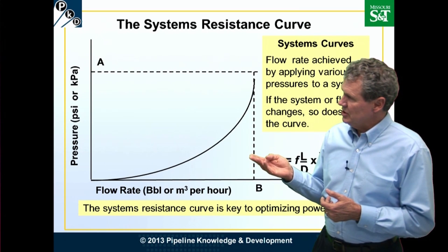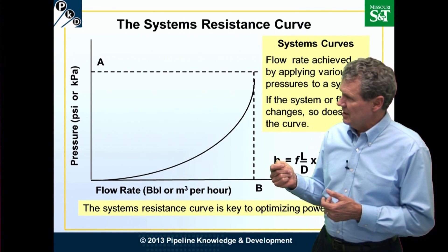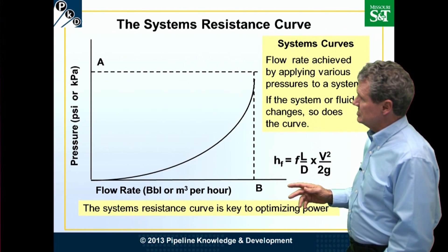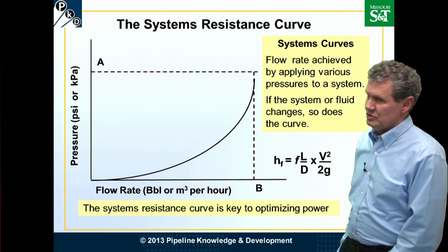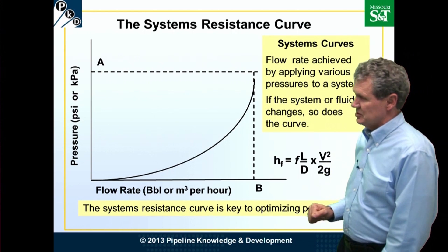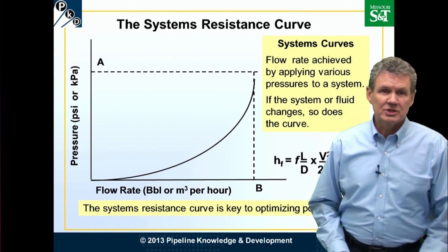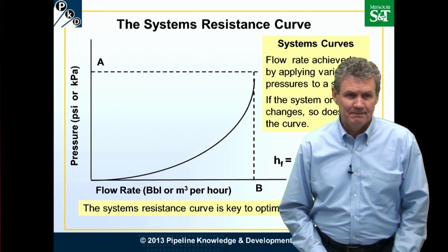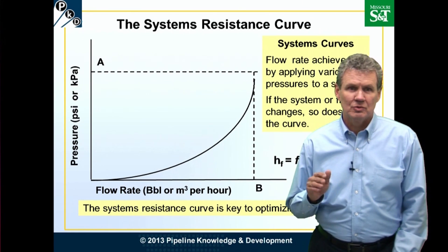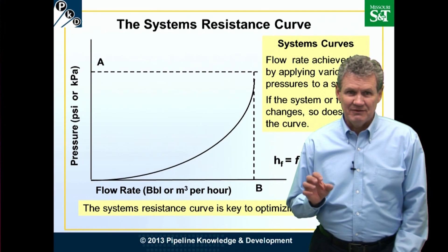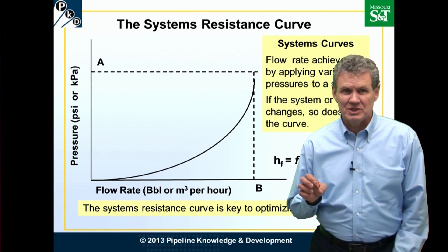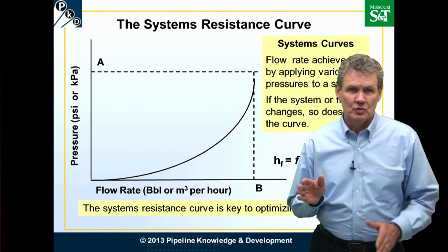What this shows us — if you notice — the systems curve is not a straight line, it is a curved curve. The reason it's curved has to do with the equation we use to calculate pressure loss. If you remember, velocity is squared in this particular equation, and so the shape of this curve is parabolic. What the systems curve tells us is the amount of pressure required to pump a given system with a given set of fluid properties at a certain rate.